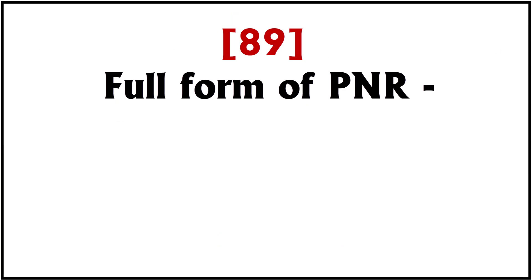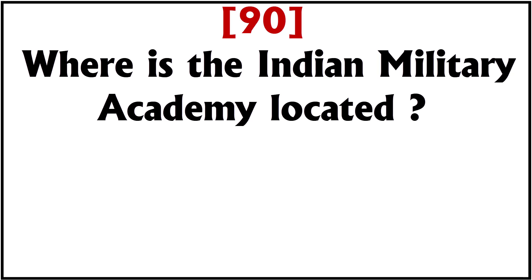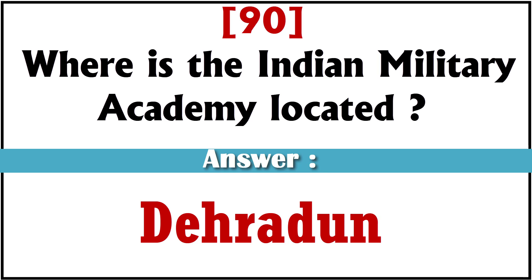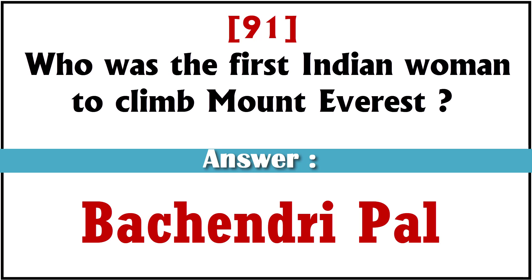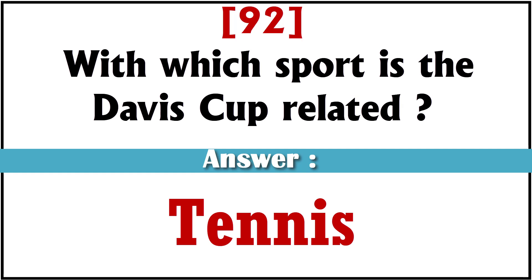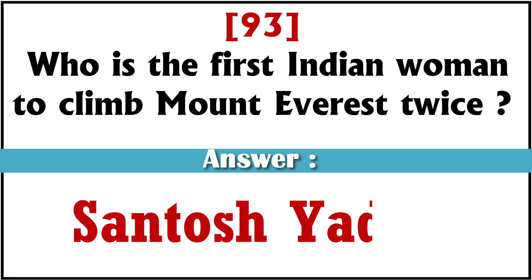Full form of PNR? Passenger Name Record. Where is the Indian Military Academy located? Dehradun. Who was the first Indian woman to climb Mount Everest? Bachendri Pal. With which sport is the Davis Cup related? Tennis. Who is the first Indian woman to climb Mount Everest twice? Santosh Yadav.